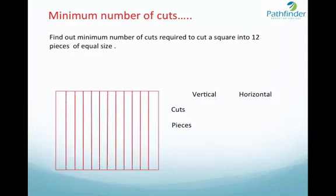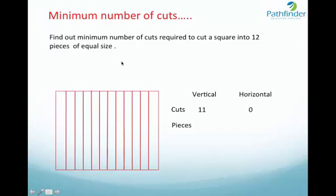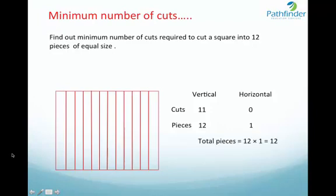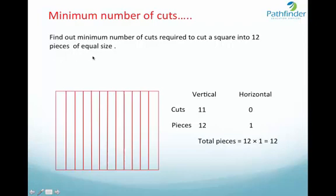For example, if we apply all 11 cuts in the vertical direction — because for 12 pieces we require 11 cuts — and there is no horizontal cut, we will get 12 pieces out of 11 vertical cuts and 1 piece out of 0 horizontal cuts. The total number of pieces will be 12 × 1 = 12. So, number of vertical pieces times number of horizontal pieces gives us the total number of pieces. Thus, 11 cuts were required to cut this square into 12 pieces.